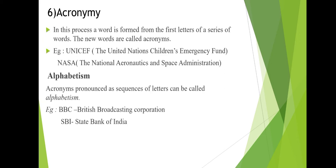The first one is acronym. An acronym is a word formed by the first letters of a series of words, and the new word formed is called an acronym. For example, UNICEF stands for United Nations Children's Emergency Fund — the first letters form the word UNICEF. Another example is NASA, which stands for National Aeronautics and Space Administration. The first letters of the series of words form an acronym.